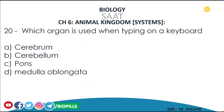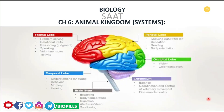Question number 20: Which organ is used when typing on a keyboard? A) Cerebrum, B) Cerebellum, C) Pons, D) Medulla oblongata. The correct answer is B) Cerebellum, because it is responsible for the coordination of voluntary movements.